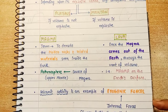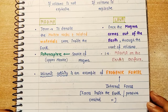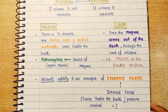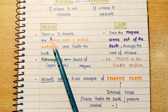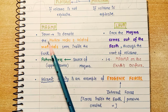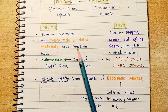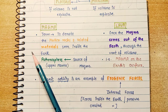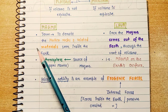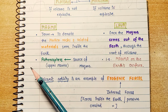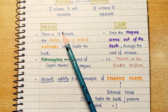Now let's learn two terms: magma and lava. Magma is a term used to denote the molten rocks and related materials seen inside the earth. If you have molten rock material, ashes, steam, and gases inside the earth, it is called magma.